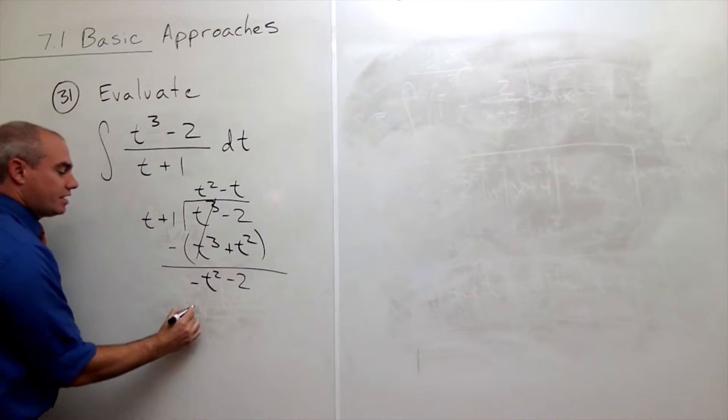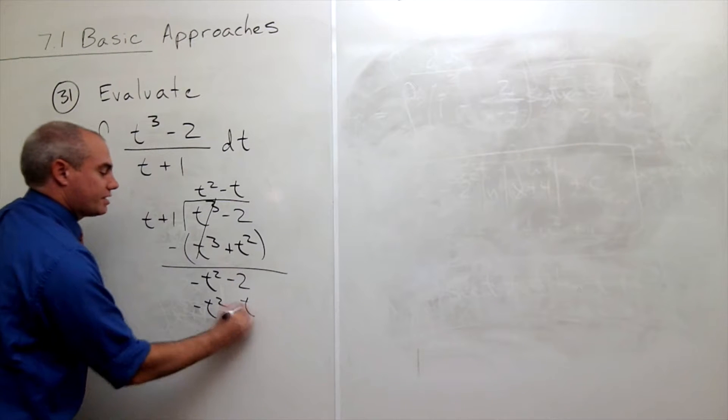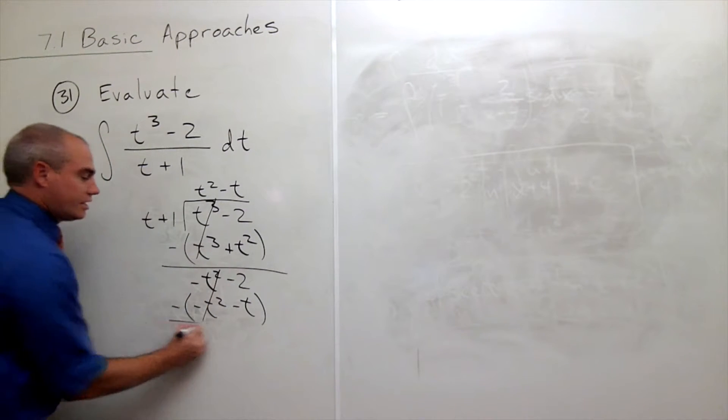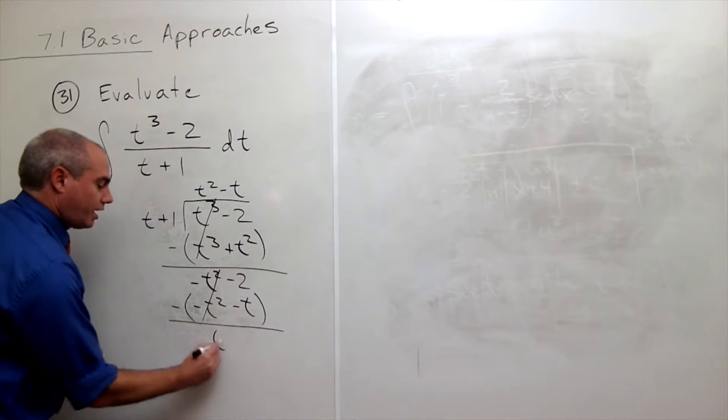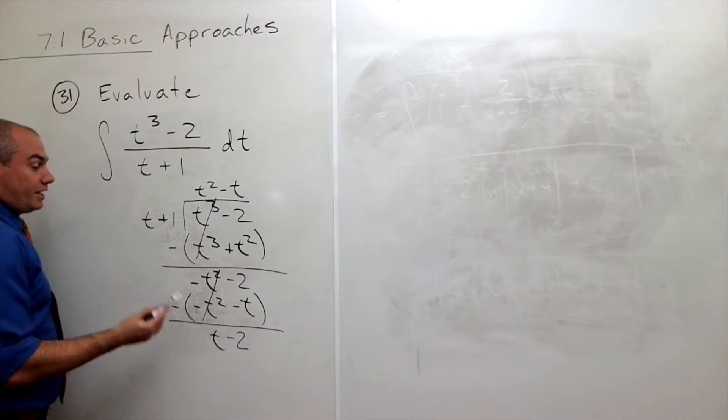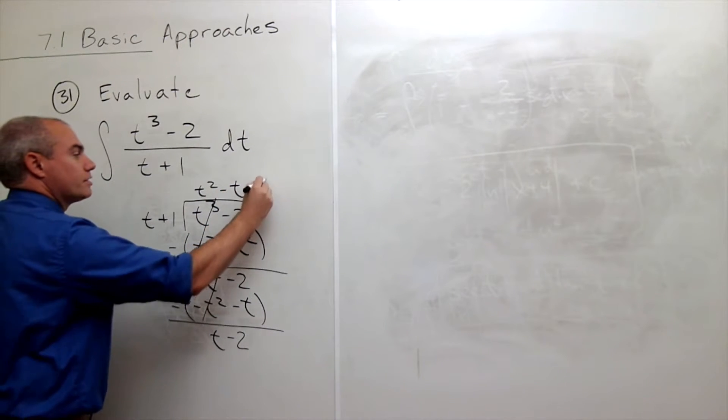Minus t times t is minus t squared and minus t times 1 is minus t and now I want to subtract all that. The negative t squareds cancel and I get minus times minus is plus t minus 2. How many times does t go into t? Well, one time. So plus 1.